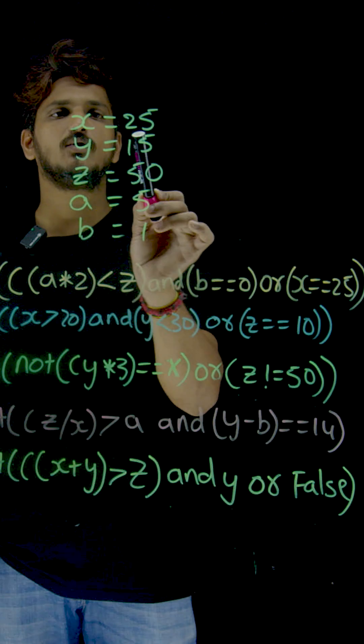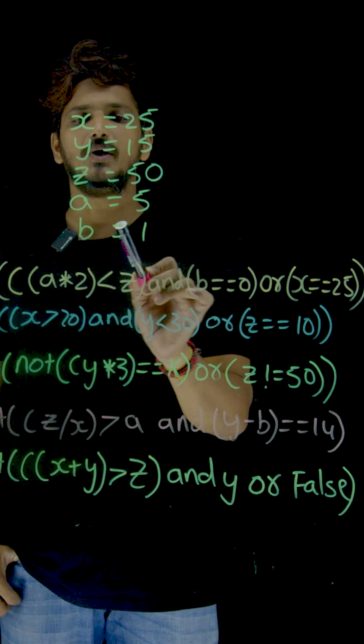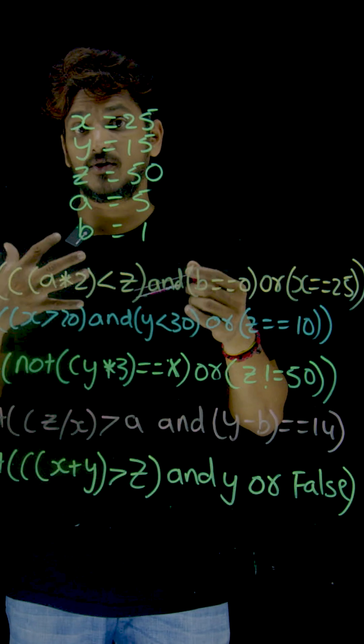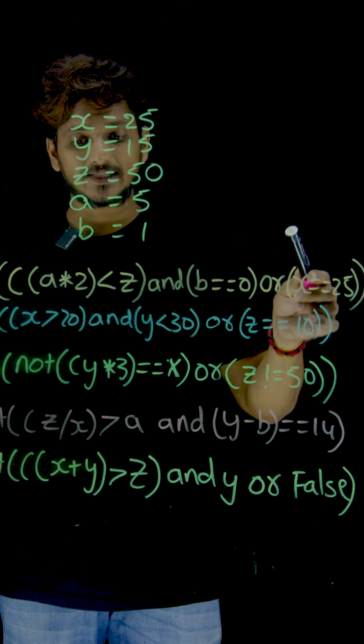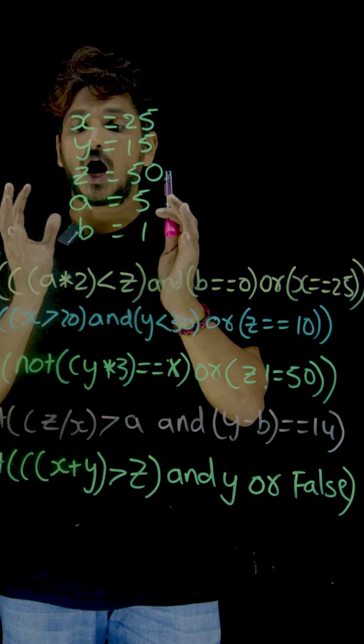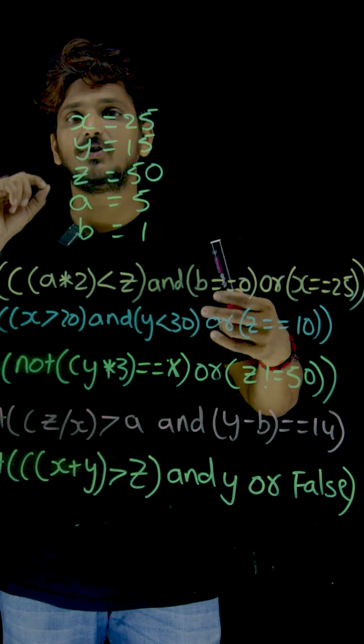So let's try to understand: x equals 25, y is equal to 15, z is equal to 50, a equals 5, b equals 1. Print. As of now, up to now, we don't know how to use brackets. But these examples are completely based on brackets. Brackets has been provided. How these are executed? Analyze them.